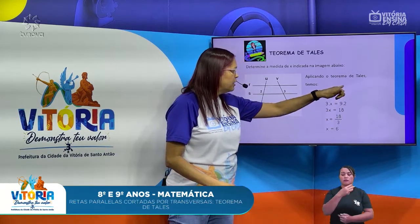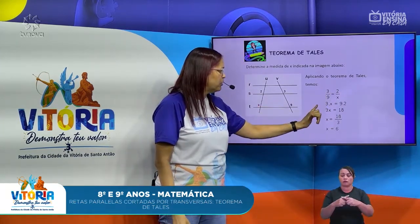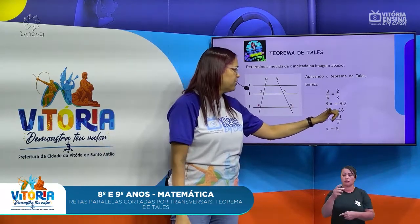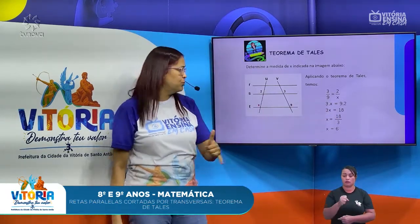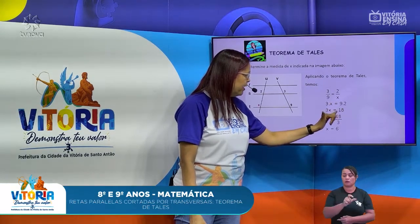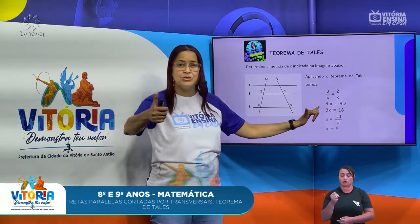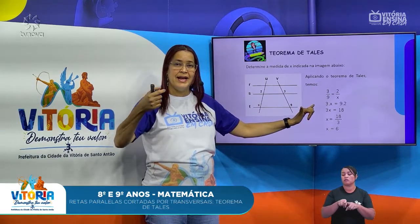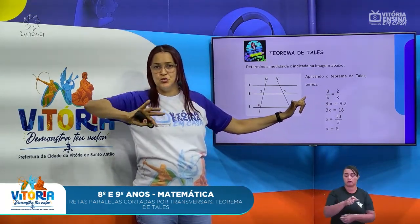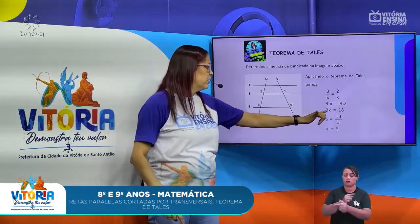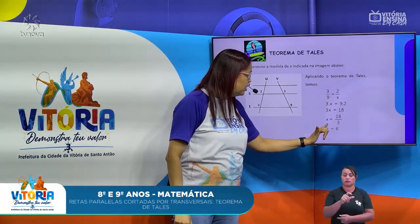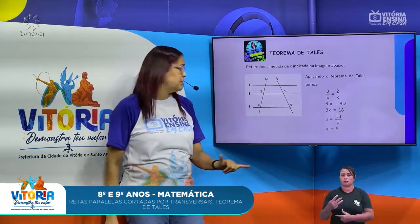3 que multiplica X, 2 que multiplica 9. Então, 3X igual a 9 vezes 2. 3X vai ser igual a 18, porque 9 vezes 2 é 18. O que é que a gente vai fazer? Isolar o X e passar o que está ali junto do X dividindo. Esse 3 está multiplicando, vai passar dividindo. X é igual a 18 dividido por 3, X é igual a 6.